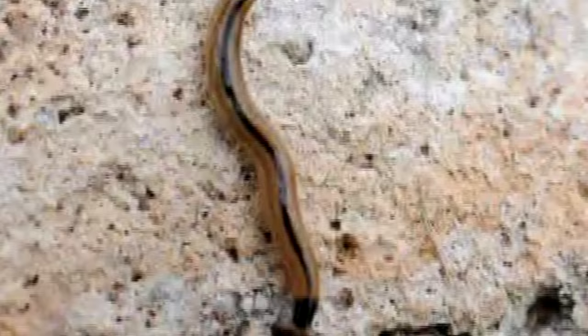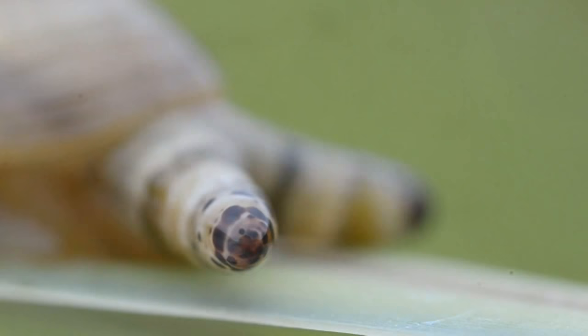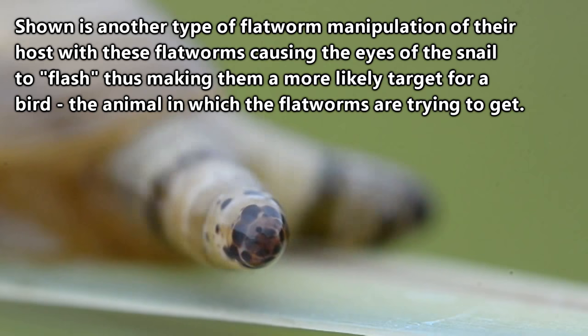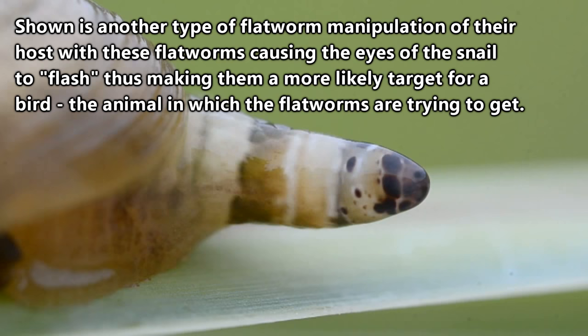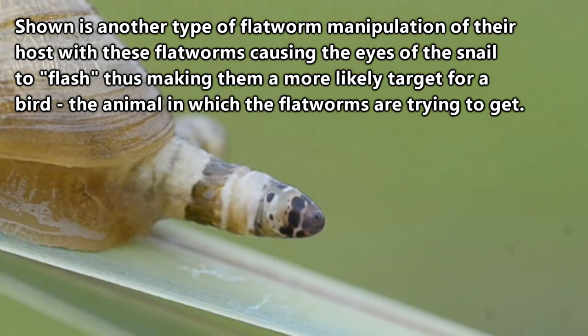Here's an example: some species of tapeworms don't become sexually mature until they reach a higher body temperature, and this is achieved by ending up in a bird host after living in the cold-bodied fish that the bird will eat. Unless they make it to that point, they won't ever mature. Flatworms have even gone so far as manipulating their hosts in order to end up where they need.